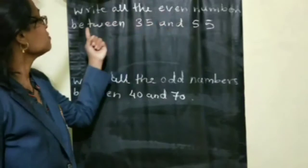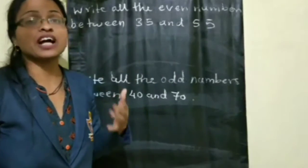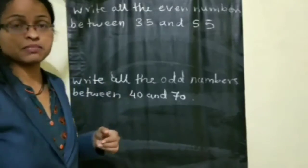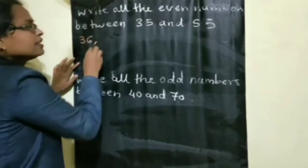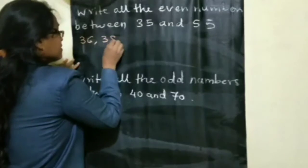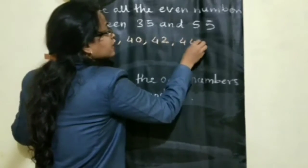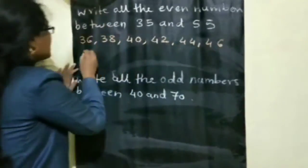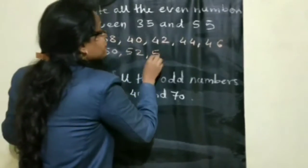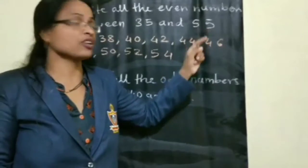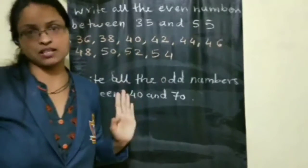Next: write all the even numbers between 35 and 55. Between 35 and 55, we have to find the even numbers. After 35: 36, 38, 40, 42, 44, 46, 48, 50, 52, 54 — up to but not including 55. These are all the even numbers between 35 and 55.